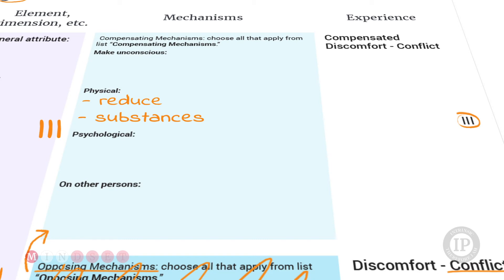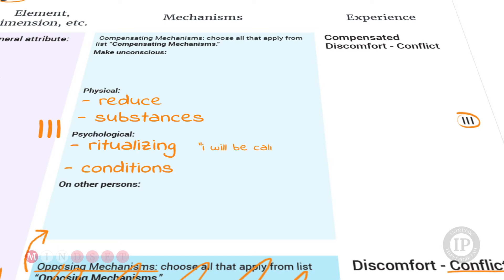Or psychologically, one may add a mechanism that would, let's say, like ritualizing or putting conditions. So it would be, I will be calm if I do such and such routine or ritual or conditions. I will have serenity if...